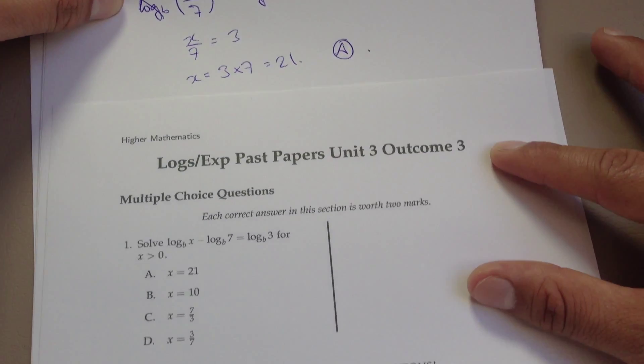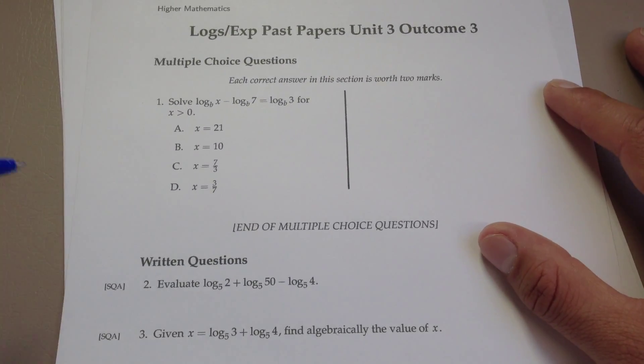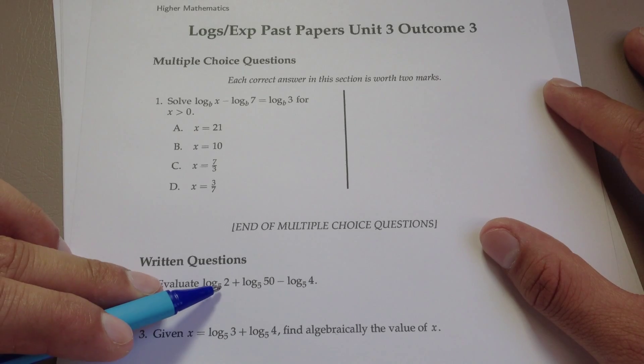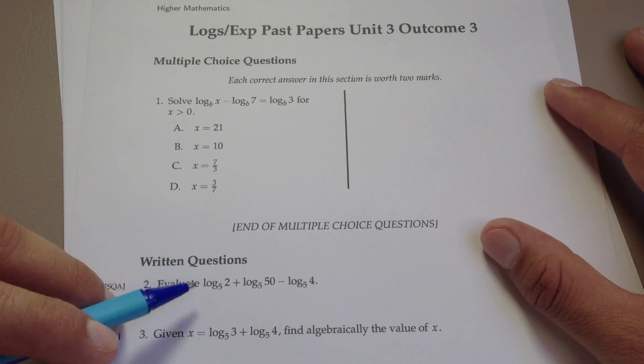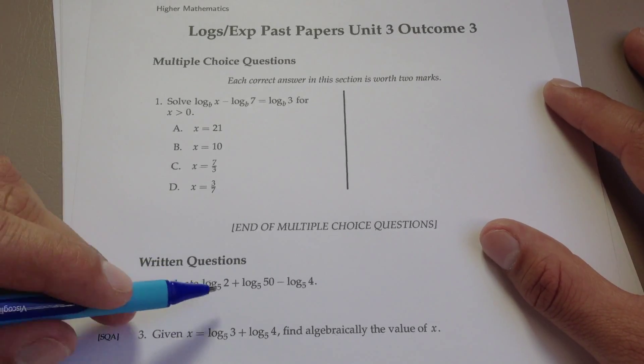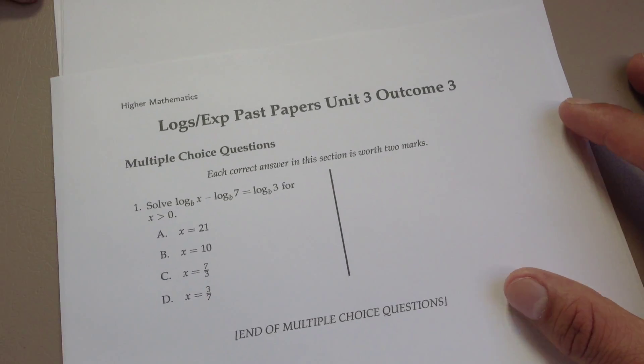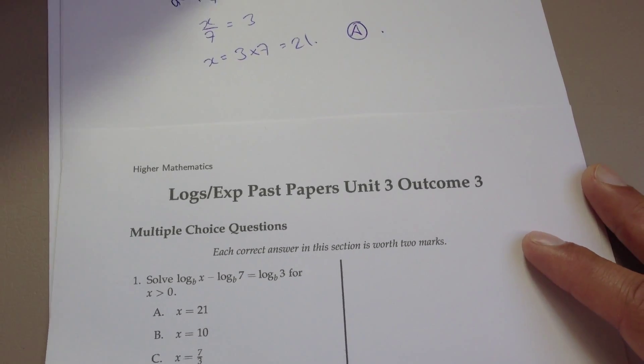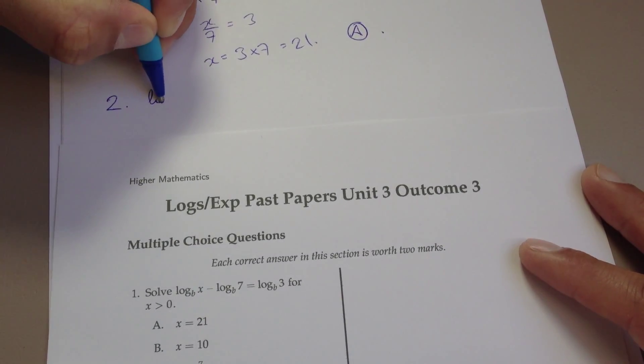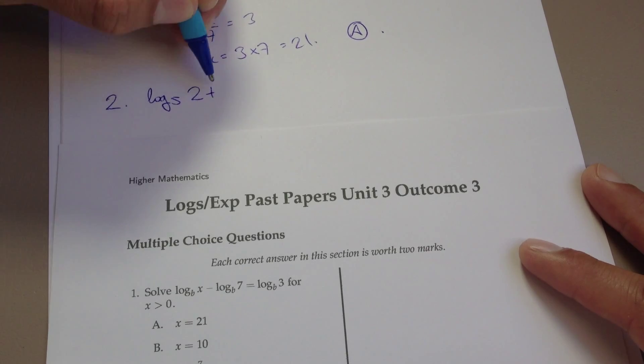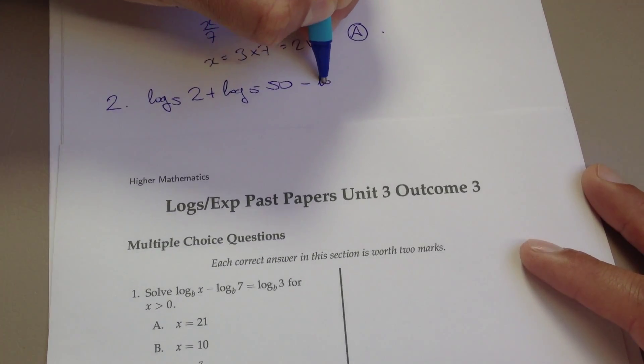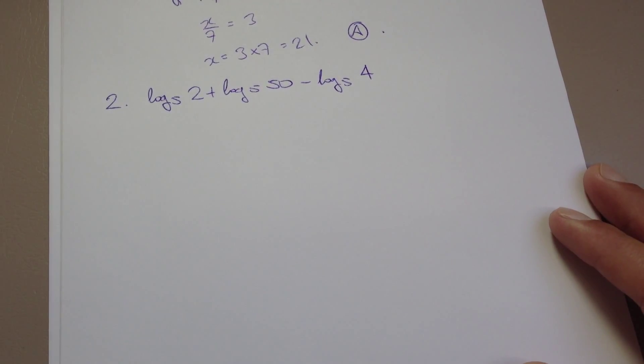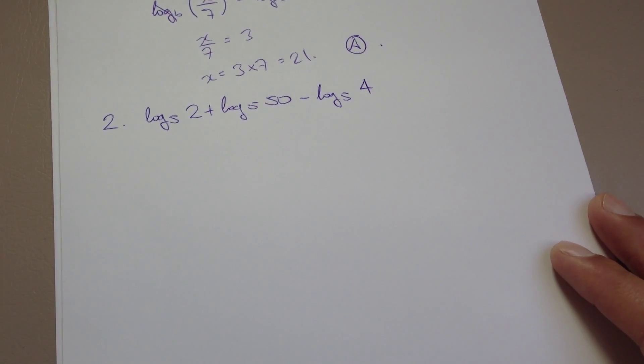Let's have a look at another one very quickly. Here we have evaluate log to the base 5 of 2 plus log to the base 5 of 50, take away log to the base 5 of 4. Now this is a very similar question to the one previously. We'll be using our log rules here, so let me just write down the question. So we've got log to base 5 of 2 plus log to base 5 of 50, take away log to base 5 of 4. And we'll go ahead and solve this now.